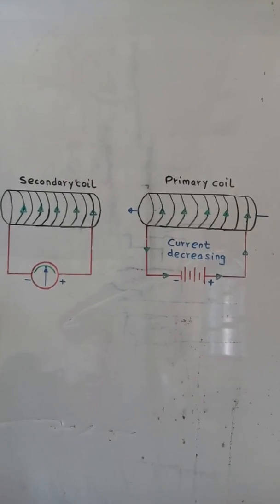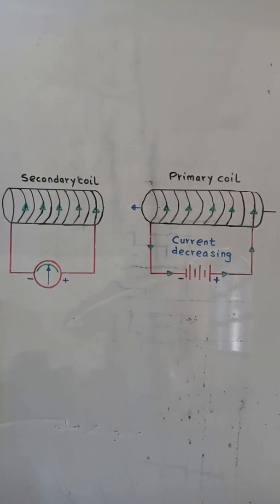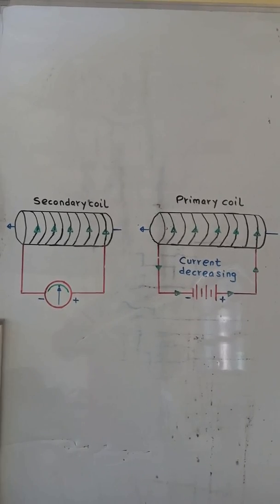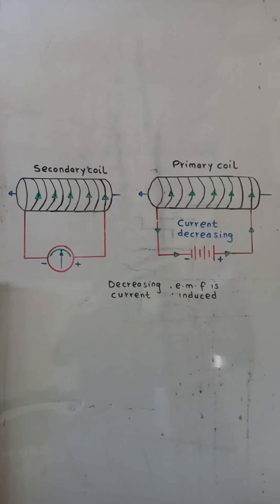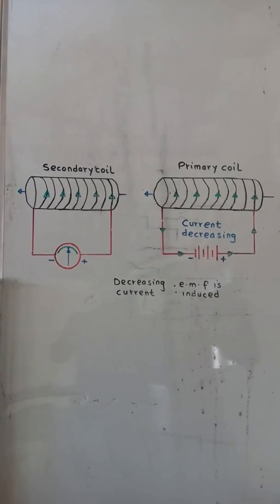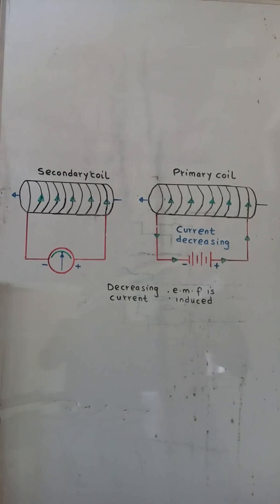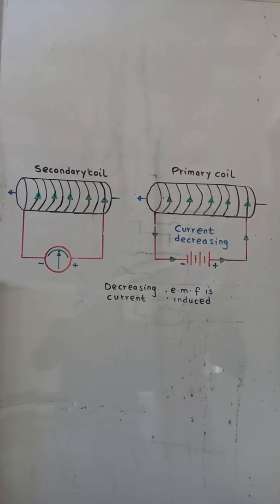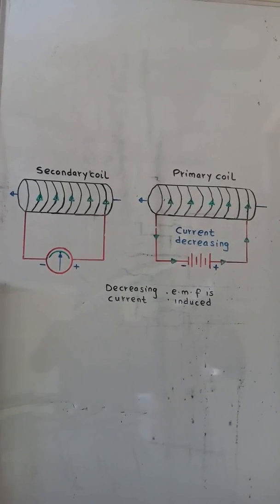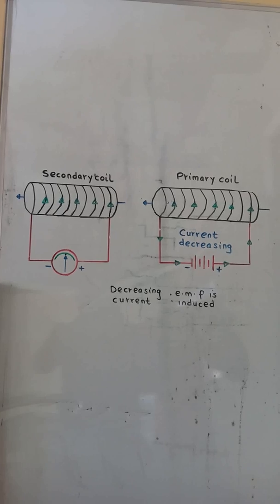When the current in the primary coil is decreasing, there will be an induced EMF in the secondary coil. The decreasing current causes a decrease in the magnetic flux in the secondary coil. In response, there is an induced EMF in the secondary coil producing a current that in turn produces a magnetic field in the same direction as the primary coil.